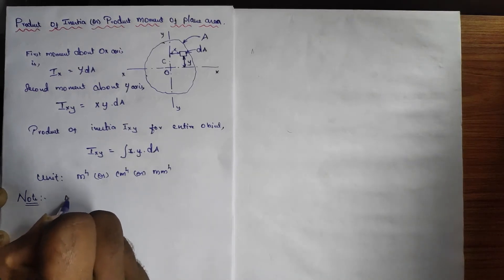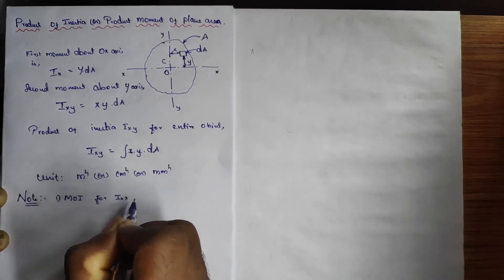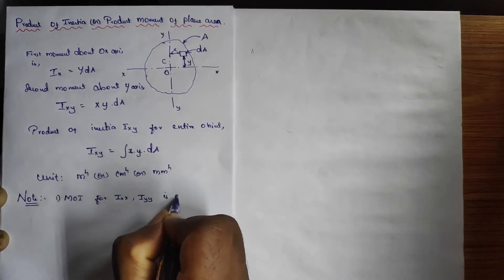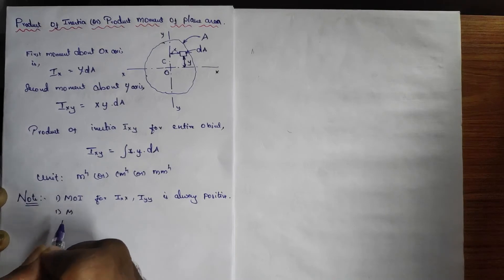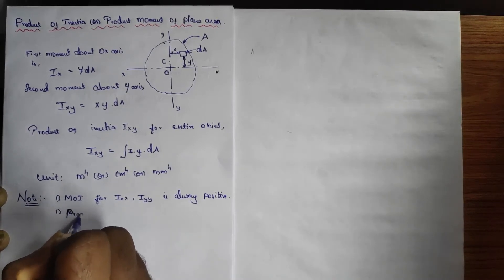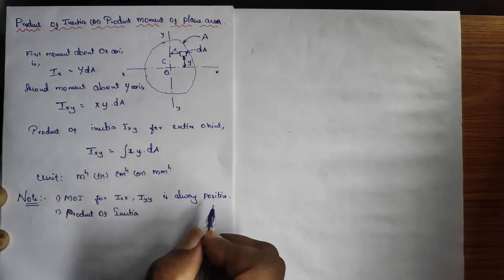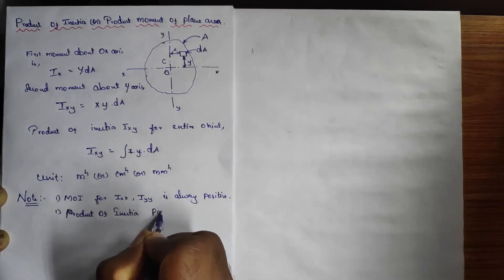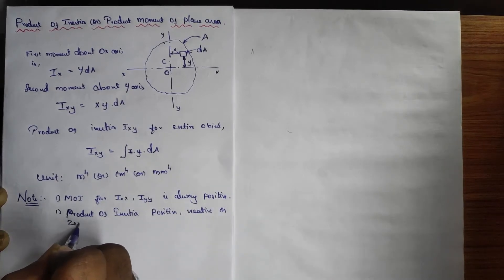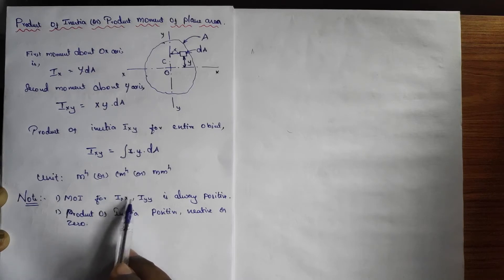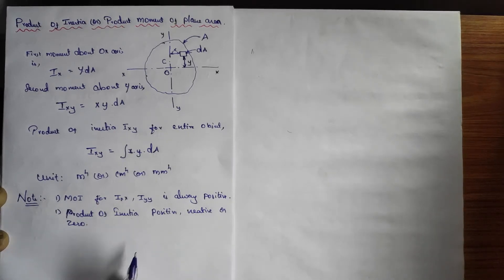The moment of inertia Ixx and Iyy is always positive. But the product of inertia Ixy will not always be zero — it can be positive, it can be negative, or it can be zero. So when you see moment of inertia Ixx and Iyy the answer is always positive, but product of inertia can be positive, negative, or zero.